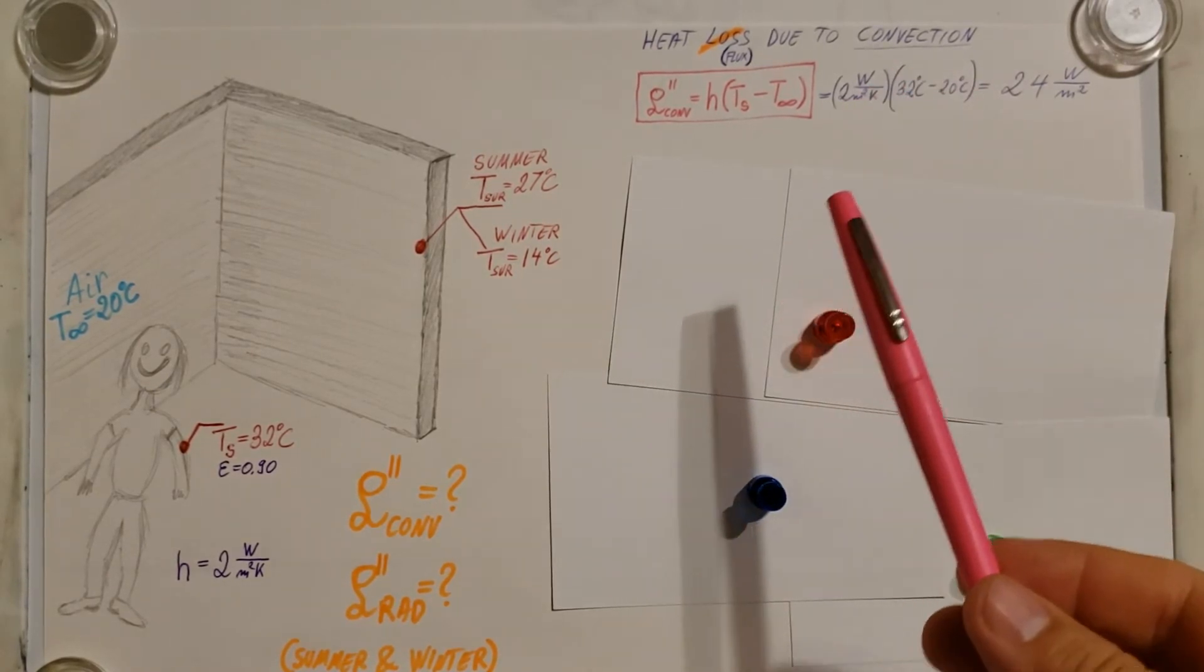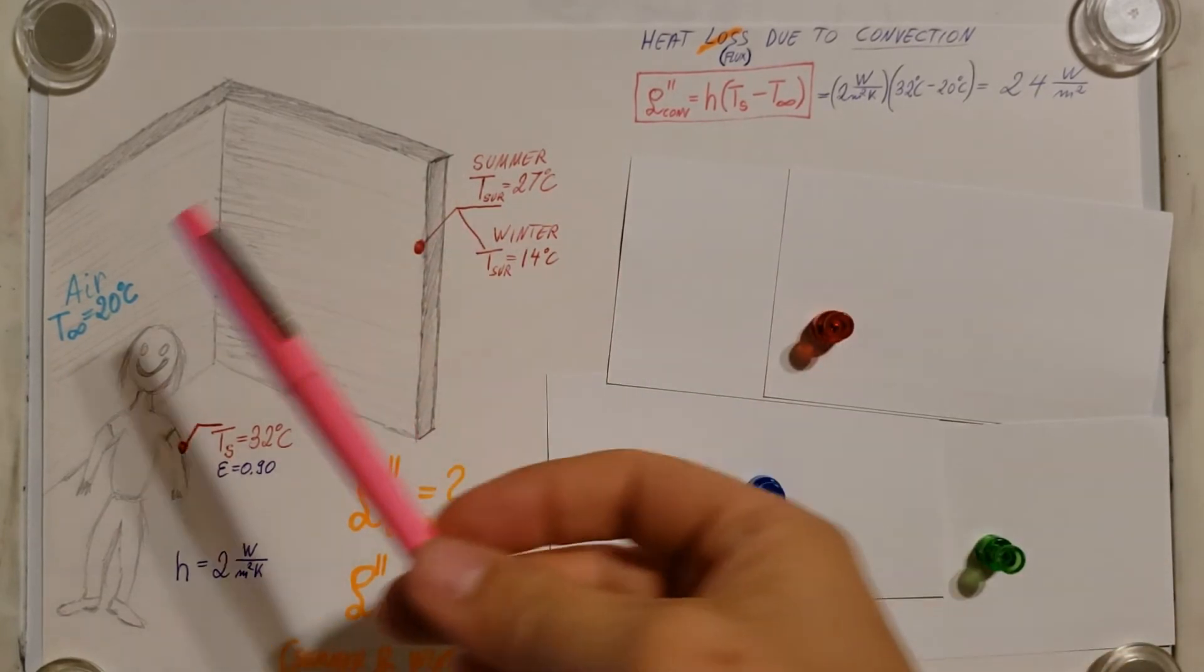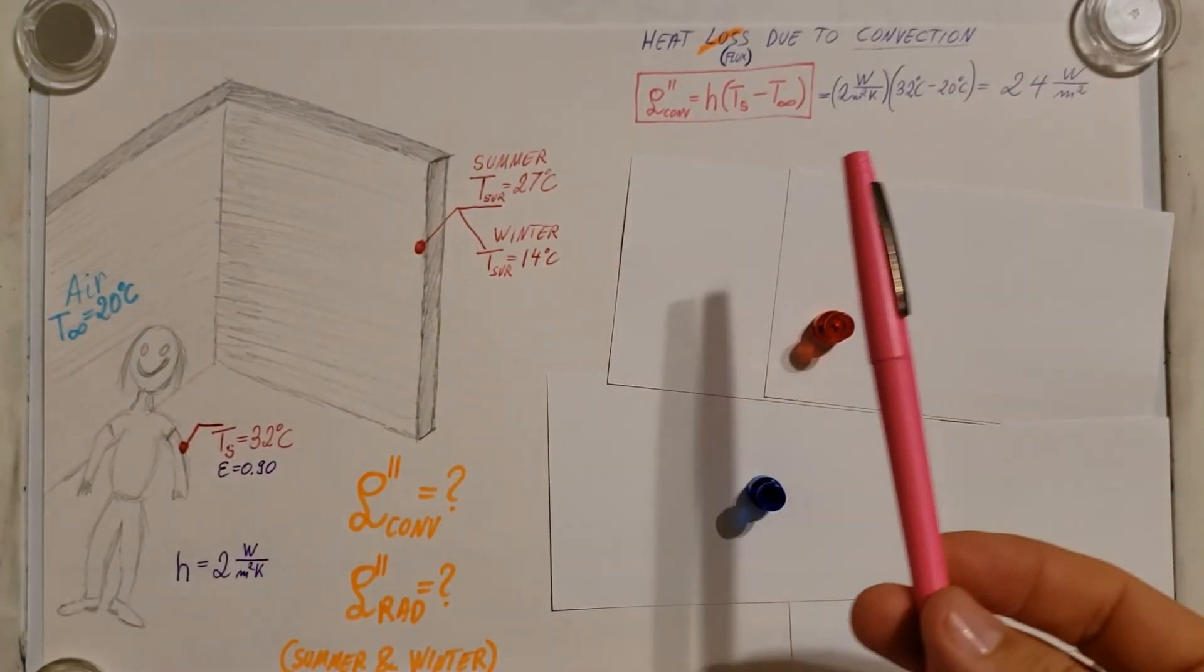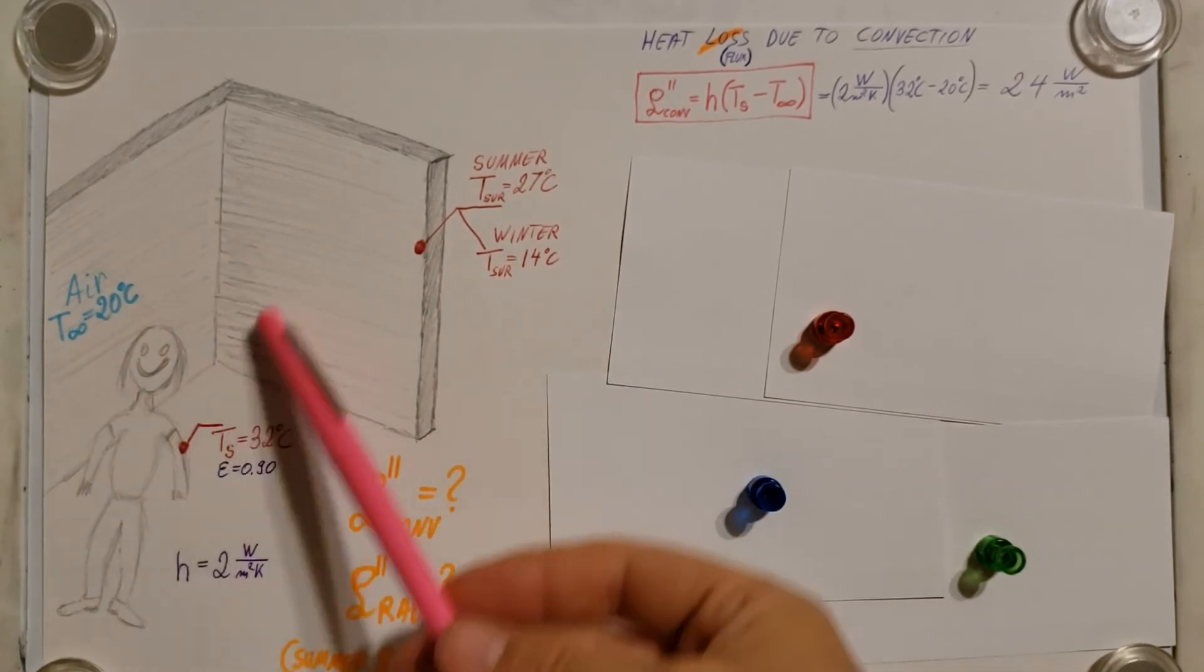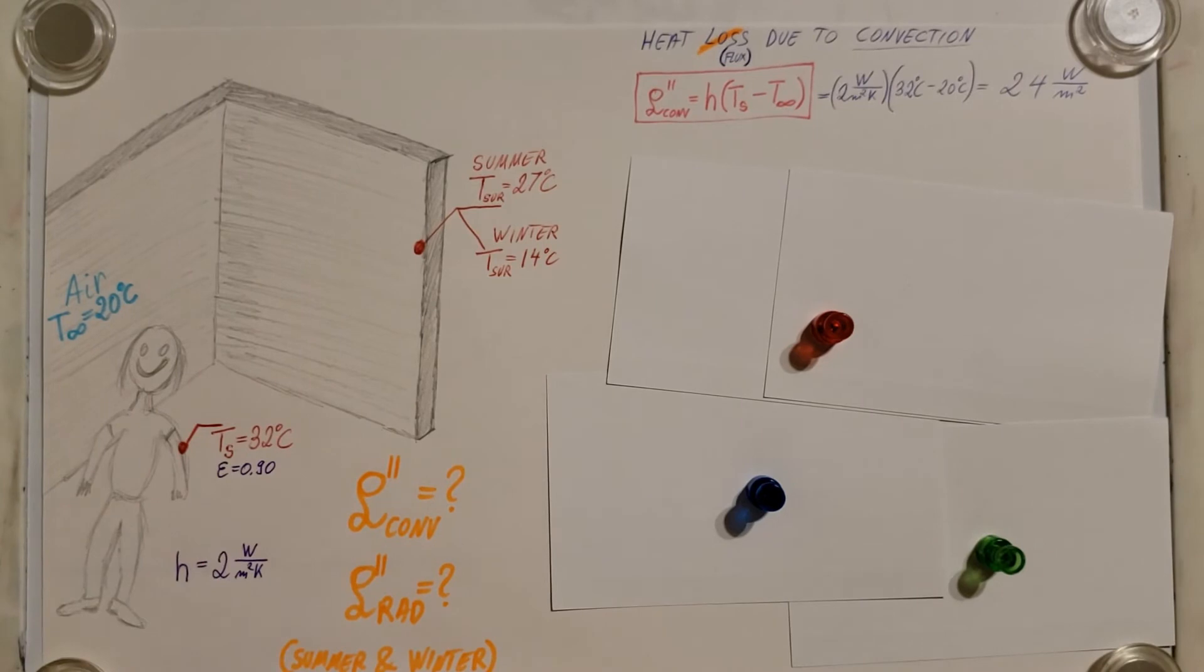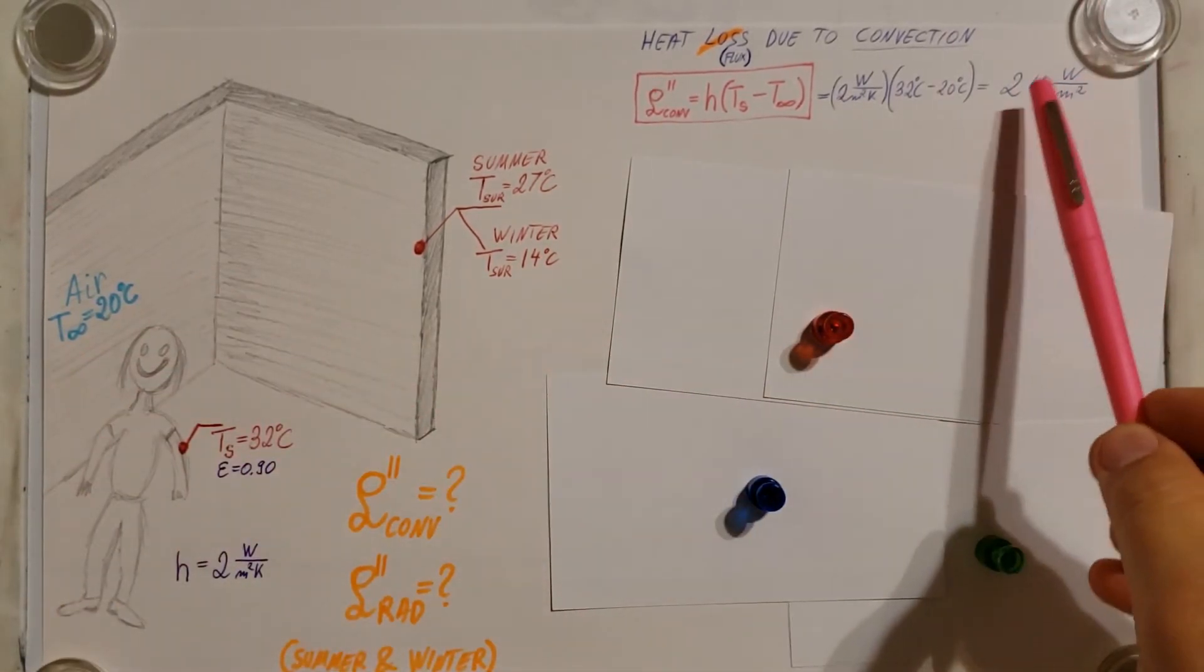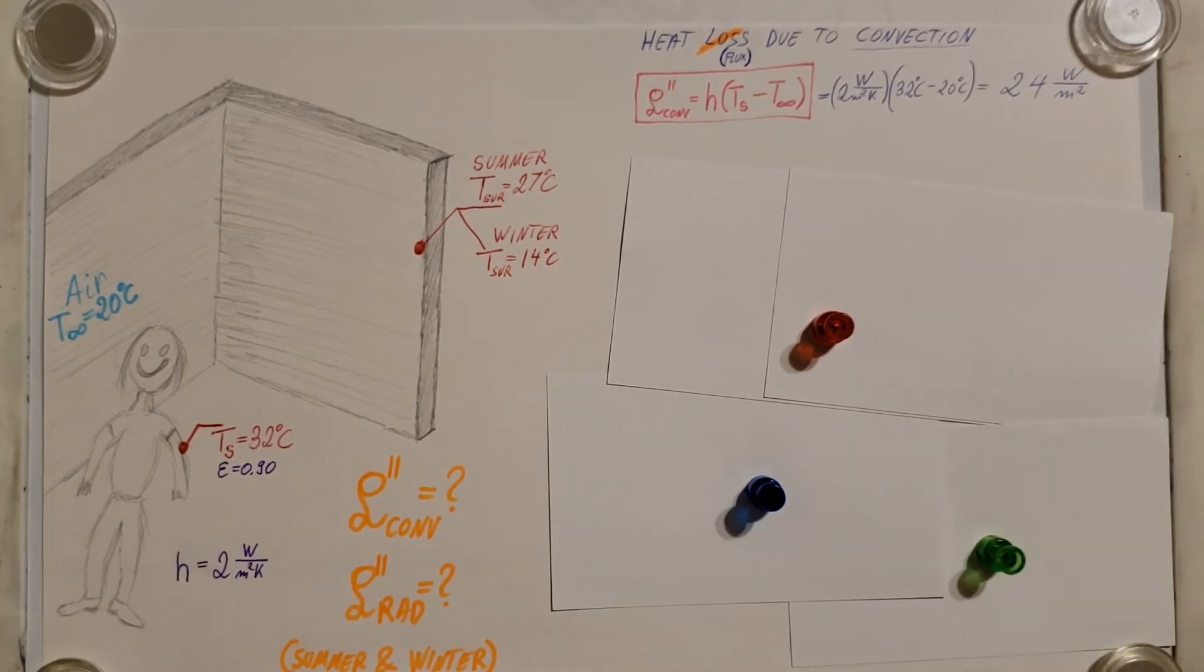Now, do we have to calculate separately for summer and winter? No, it doesn't matter what season it is. The air inside the room is always at 20. We don't alter that. So our convection in the summer and the winter is exactly the same, doesn't change.